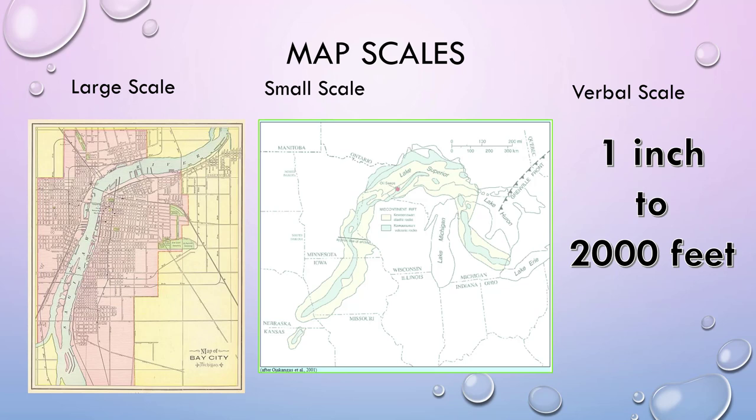Then we have the verbal scale. This is when someone tells you '1 inch to 2,000 feet.' This is useful when talking among hikers, but you're never going to see a verbal scale on a map. Instead of giving you the ratio, it tells you the units. So instead of giving you 1 inch to however many inches 2,000 feet equals out to, you get '1 inch equals 2,000 feet' — a much nicer number. You don't have to do any converting or get a calculator out. But again, you're not going to have that on an actual map.